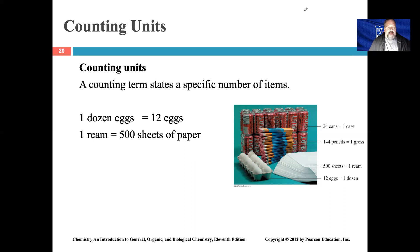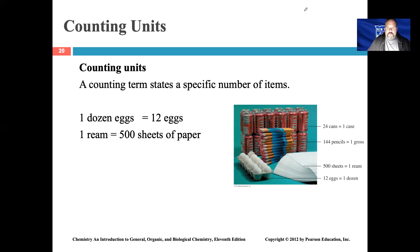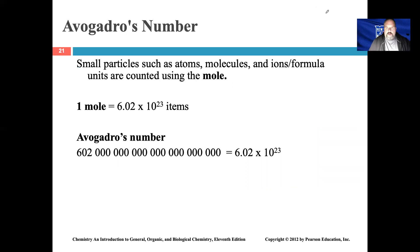Sometimes a ream reflects 500 sheets of paper. A dozen could refer to a dozen eggs, a dozen innings, a dozen pencils — many different things. Another example would be a pair: a pair of legs, a pair of pencils — essentially meaning two. So counting terms like dozen, ream, and pair all represent a specific number of items.